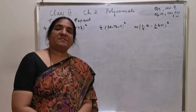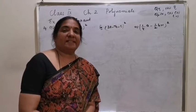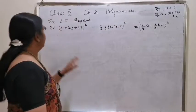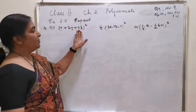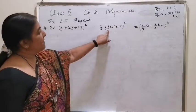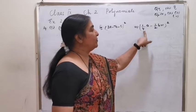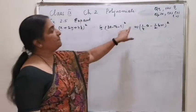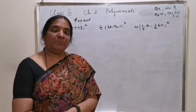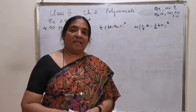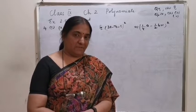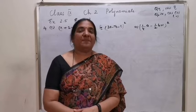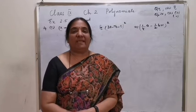We will be doing expansion first, then all the factorization questions can be done later on. Question number 4: expand x plus 2y plus 4z the whole square; 3a minus 7b minus c the whole square; 1 by 4a minus 1 half b plus 1 the whole square. The identity is a plus b plus c the whole square equals a square plus b square plus c square plus 2ab plus 2bc plus 2ac.